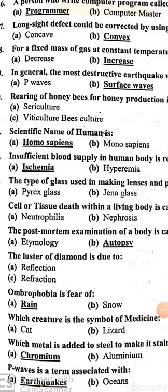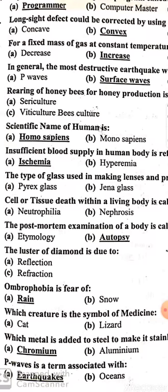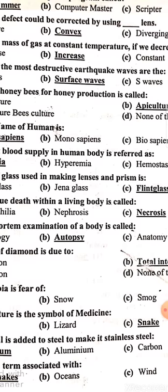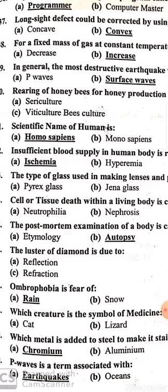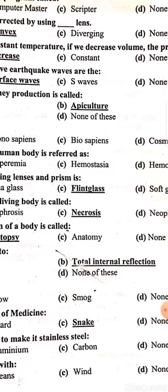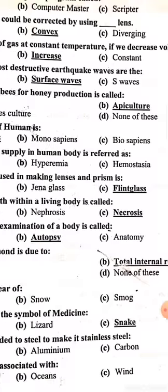Cell or tissue death within a living body is called necrosis. The postmortem examination of a body is called autopsy. The luster of diamond is due to total internal reflection.